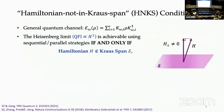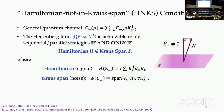To determine which regime applies, there is a specific criterion called the Hamiltonian-not-in-Kraus-span (HNKS) condition. Given a quantum channel, you calculate its Hamiltonian using a specific formula — it is a Hermitian operator. The other object is the Kraus span, spanned by operators K_i† K_j. If the Hamiltonian is not inside the Kraus span, you can build a quantum error correction protocol that allows you to achieve the Heisenberg limit using sequential or parallel strategy.